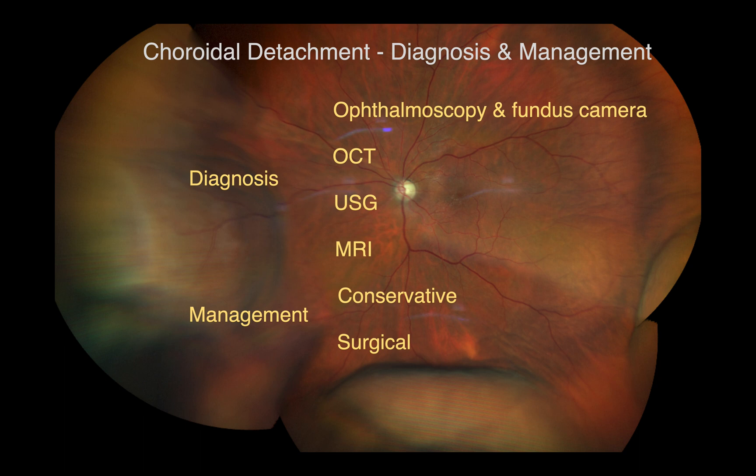In summary, choroidal detachment may be evaluated with wide-field photography, gonioscopy, ultrasound, or MRI. Management may be conservative or surgical. See you in the next video.